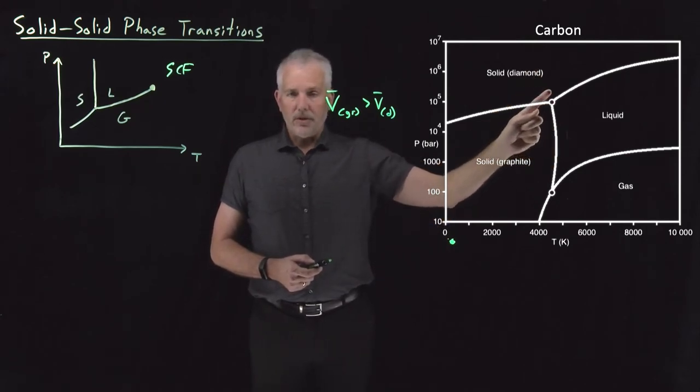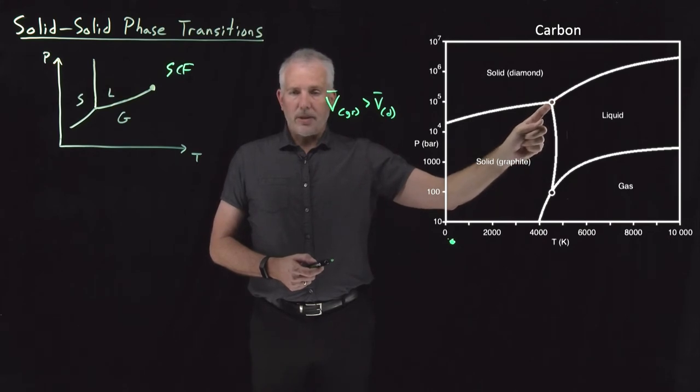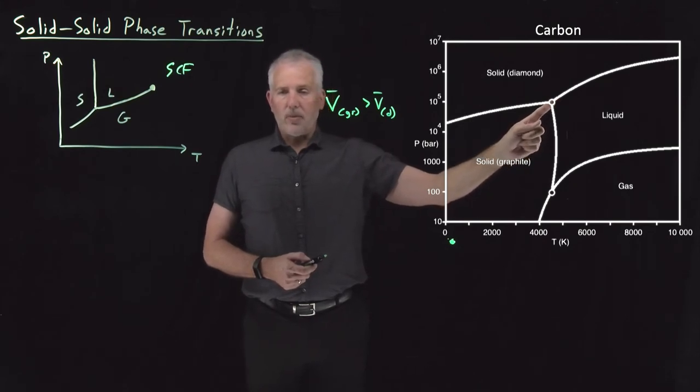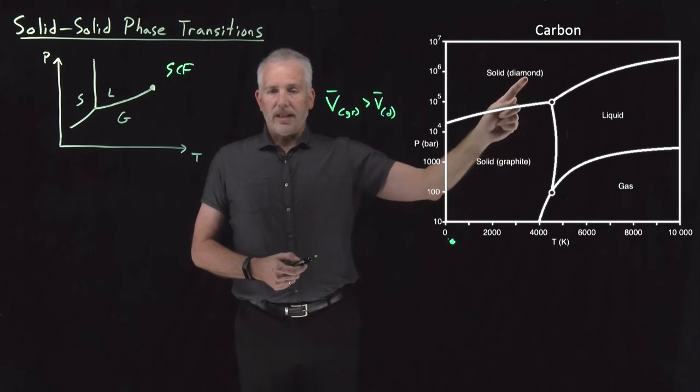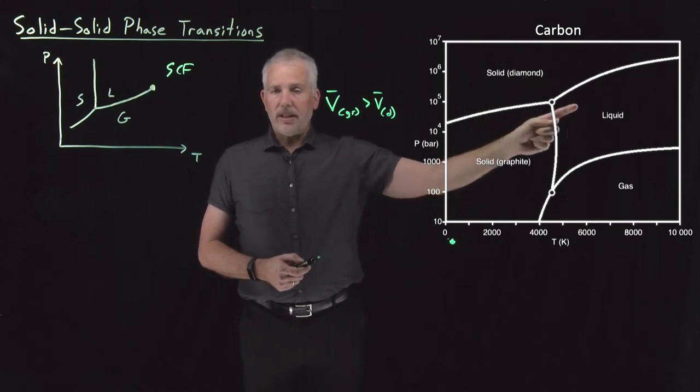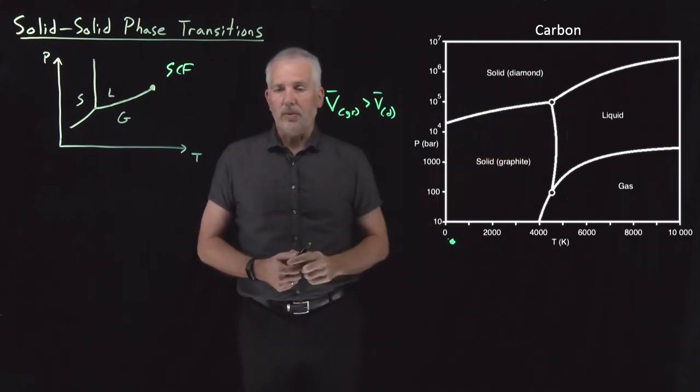There is a set of a single thermodynamic state, a single temperature and pressure, where in equilibrium we could have graphite and diamond coexisting in coexistence with their liquid as well.